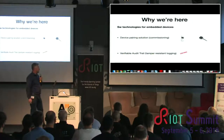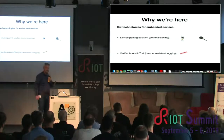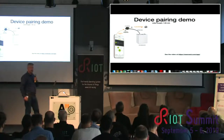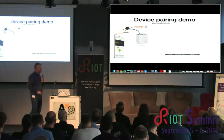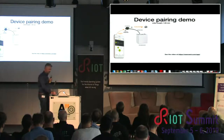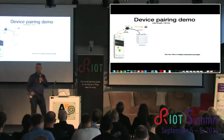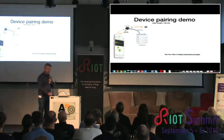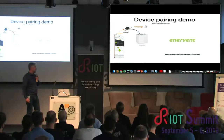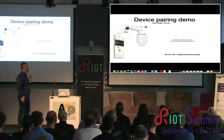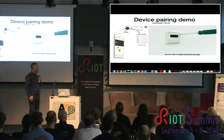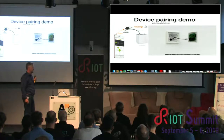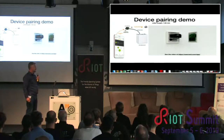What you are also able to do with the device identities is create verifiable audit trails — that's about the second technology I'm going to talk about. But let's first look at the device pairing and come back later to the verifiable audit trail solution. Here's a short introduction on how the pairing goes, because these Enervent air handling units didn't have any internet connection in advance.